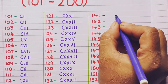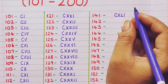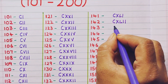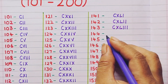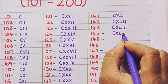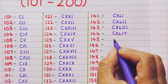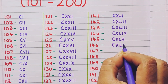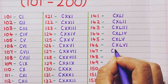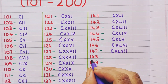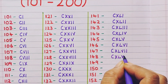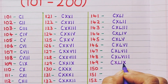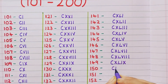141 is CXLI. 142 is CXLII. 143 is CXLIII. 144 is CXLIV. 145 is CXLV. 146 is CXLVI. 147 is CXLVII. 148 is CXLVIII. 149 is CXLIX. 150 is CL.